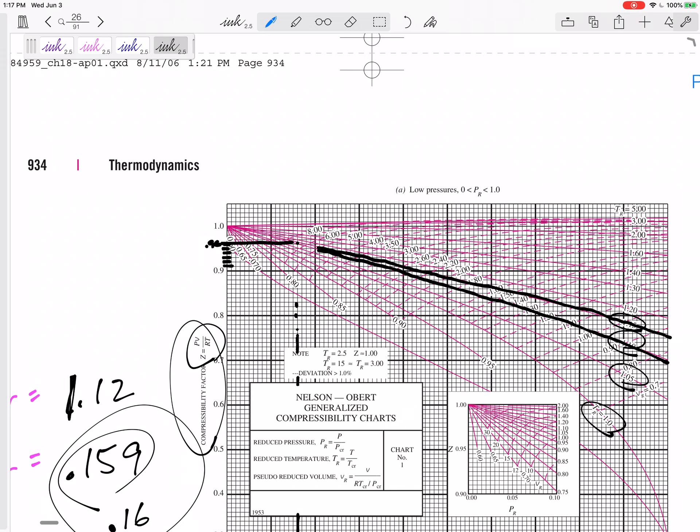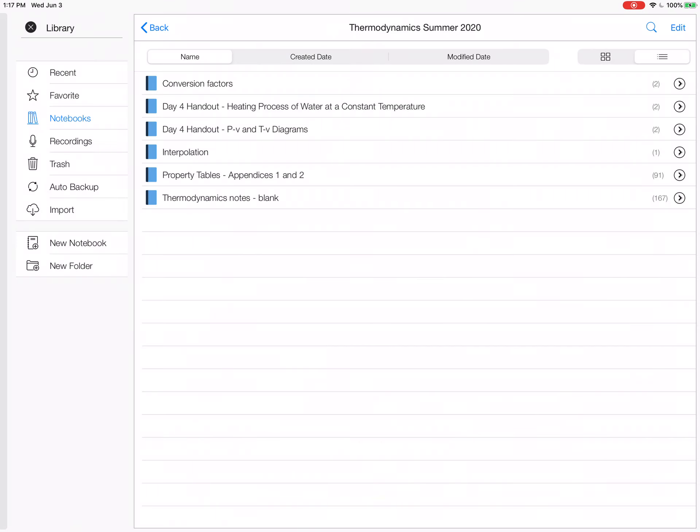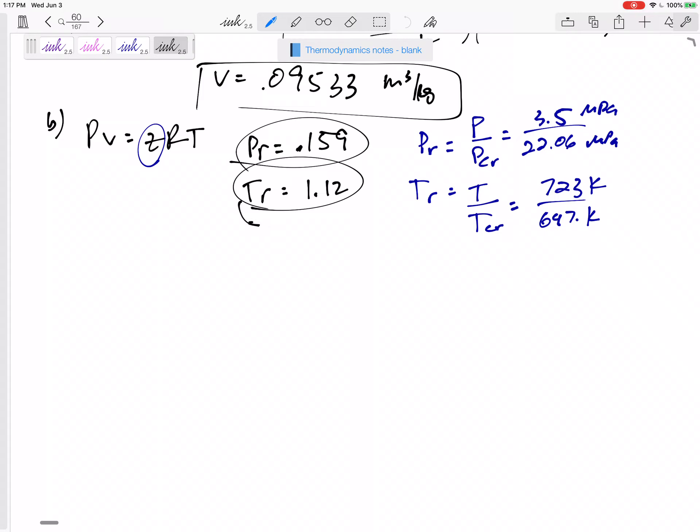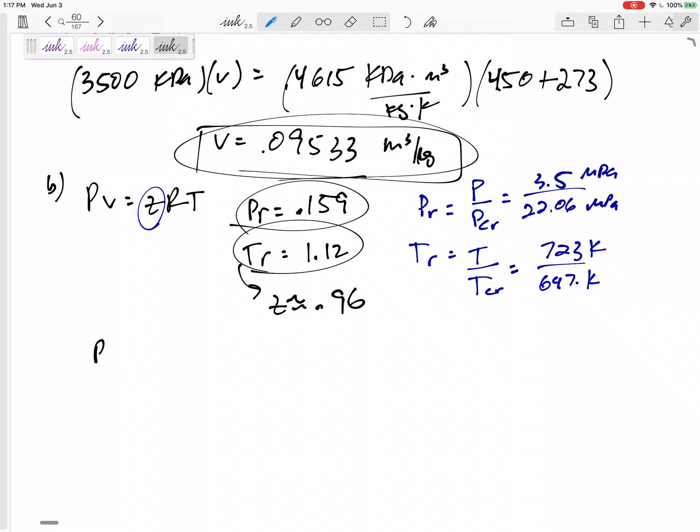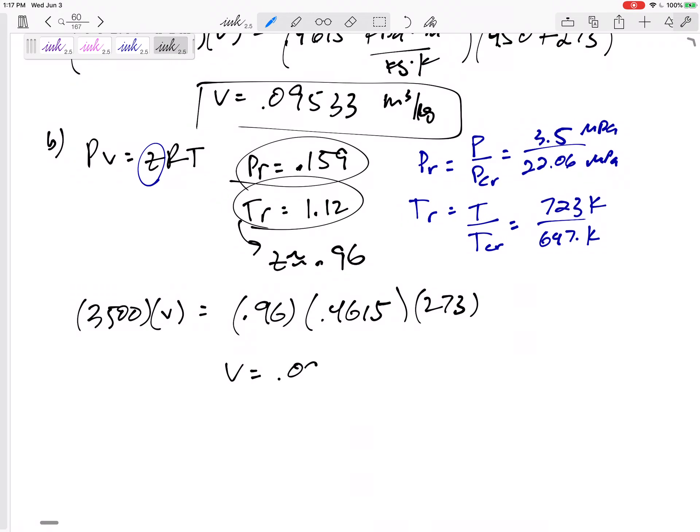It gives you another equation, right there, in case you've forgotten, PV equals ZRT. 0.96. All right, go back to our notes. From these two, Z value is about 0.96. Now, we could take 0.96 and just multiply it right here, but I don't mind doing this math one more time. 3,500 V 0.96, 0.4615, 273. I would get a V of 0.0916 meters cubed per kilogram. All right. So there is my part B when I used the ideal gas with the compressibility chart.